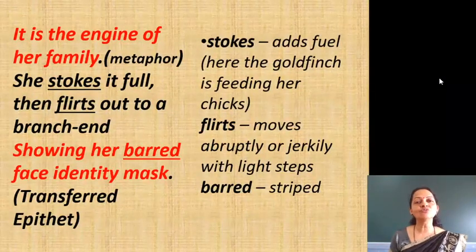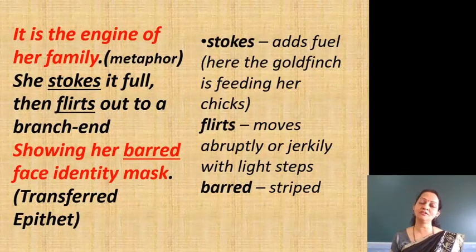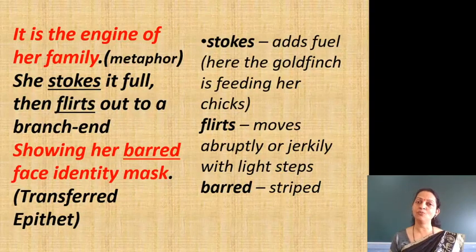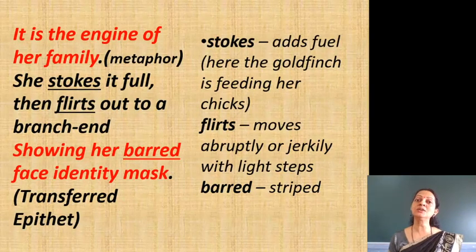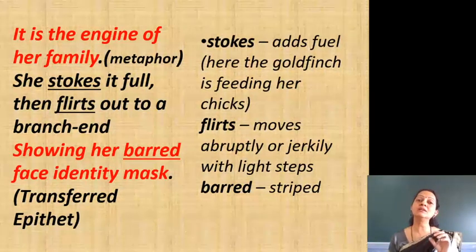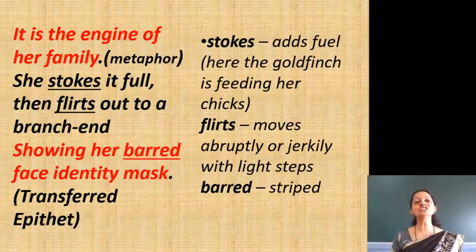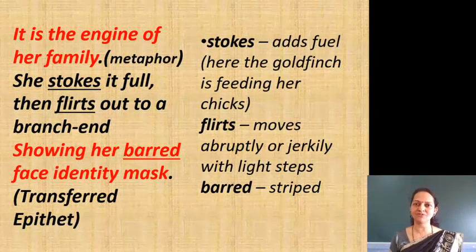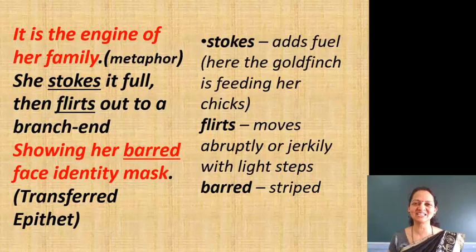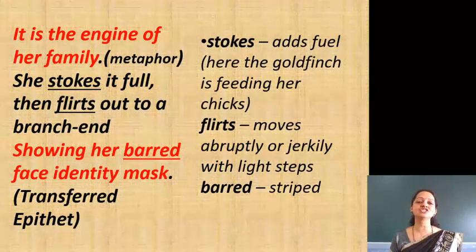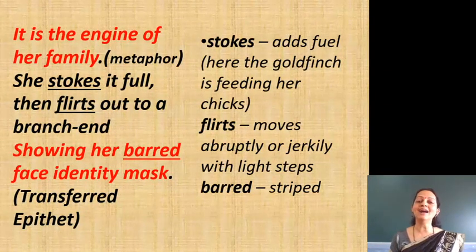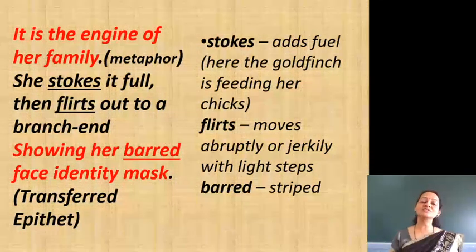'It is the engine of her family.' Here metaphor is used — the goldfinch is directly compared to the engine of the family. Earlier simile was used comparing her to a lizard; here the comparison is direct. 'She stokes it full, then flirts out to a branch and showing her barred face identity mask.' Stokes means adds fuel. She feeds her young ones and they become more energetic and active. Flirts means moves lightly and jerkily. Barred means striped.